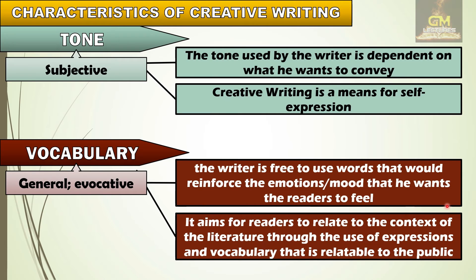Next, when it comes to vocabulary, creative writing uses vocabulary that is general and evocative, meaning the writer is free to use words that would reinforce the emotions or mood that he wants the readers to feel. The writer is trying to evoke positive or negative emotions depending on whatever words or expressions he uses in the literary piece. It also aims for the readers to relate to the context of the literature through the use of expressions and vocabulary that are relatable to the public, in contrast to academic writing which uses jargons understood only by a specific group.